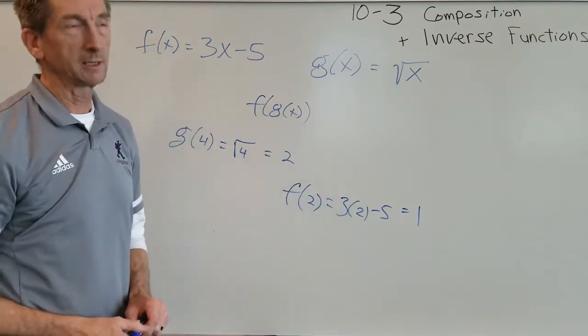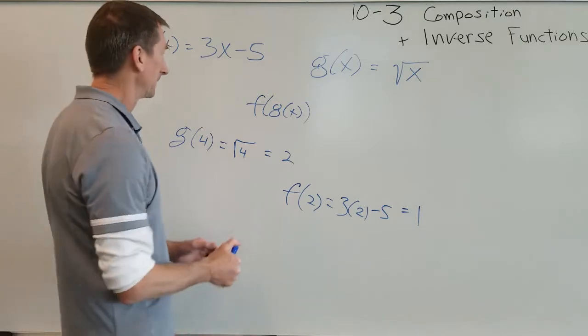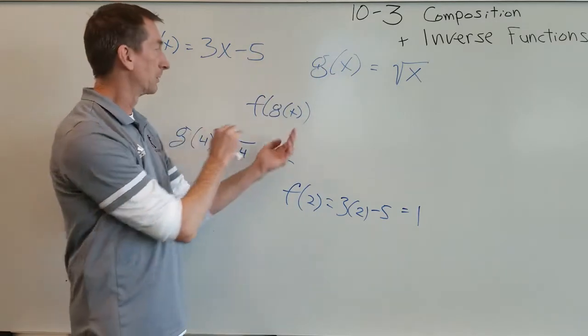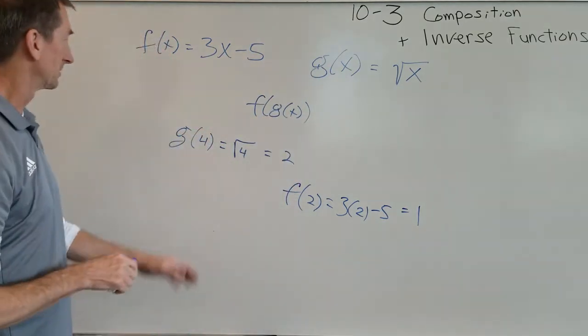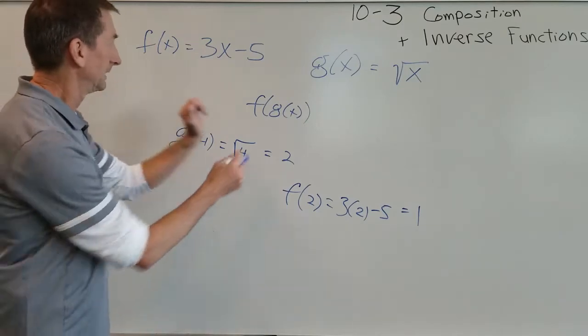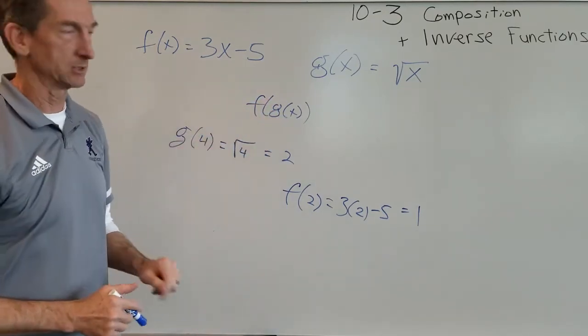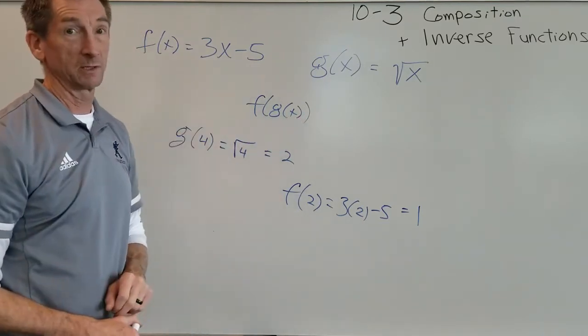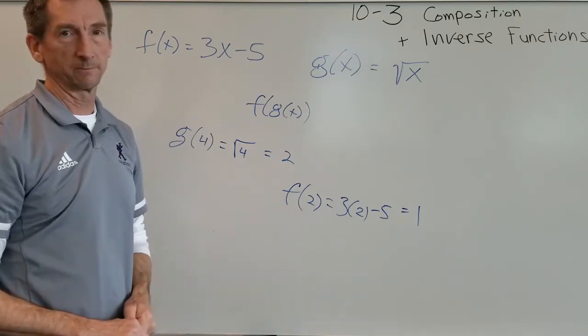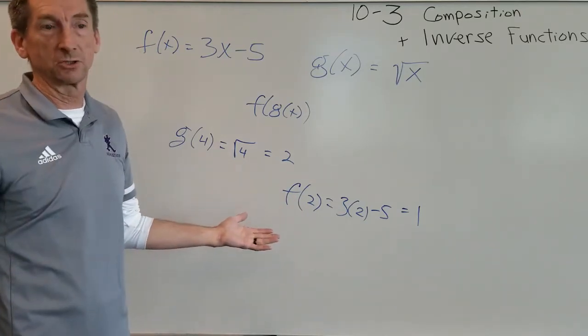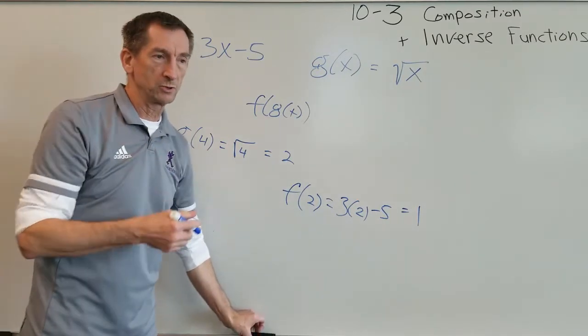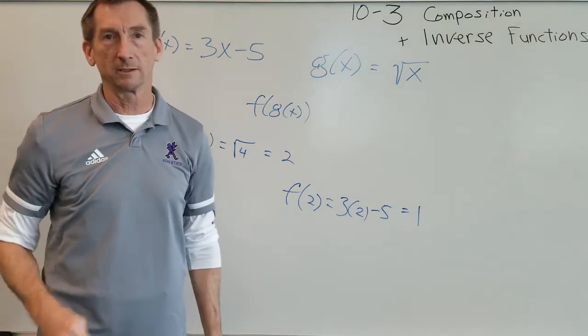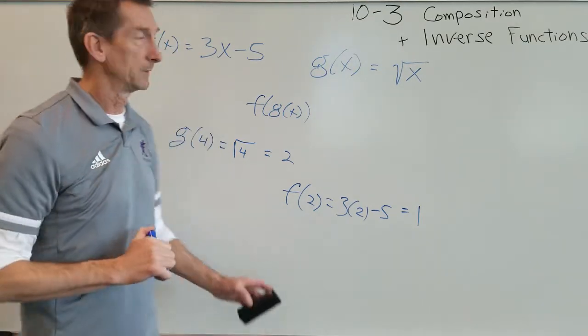Just keep in mind, nested functions or composite functions, we're working from the inside out. So we're going to start with what's on the inside, solve that, take that answer, put it into what's on the outside, in this case 3x minus 5, and come up with a solution. That is composition functions. As you work through the problems, you may find a few other little twists and turns, but it's all right there in that section. Be sure to read the section.